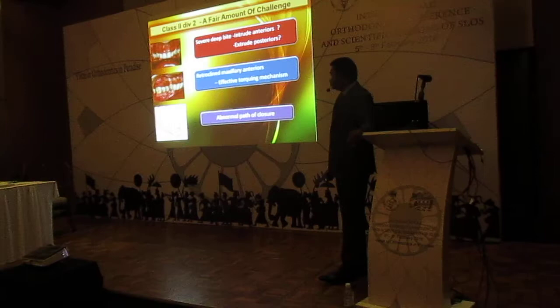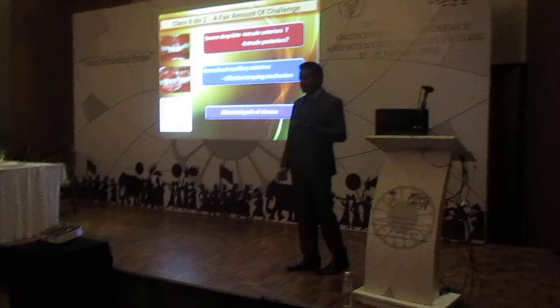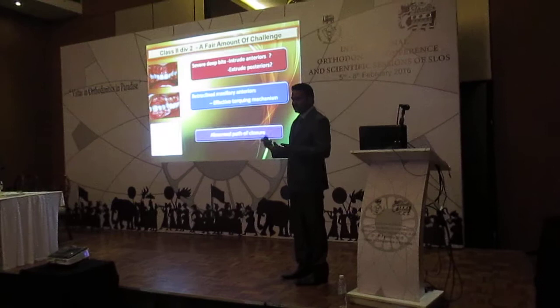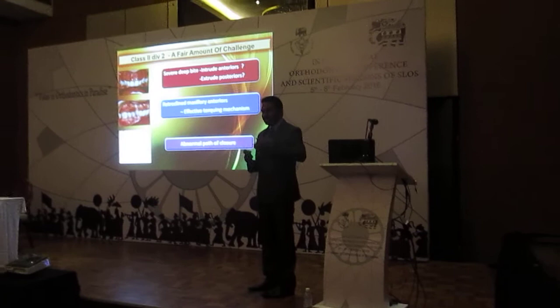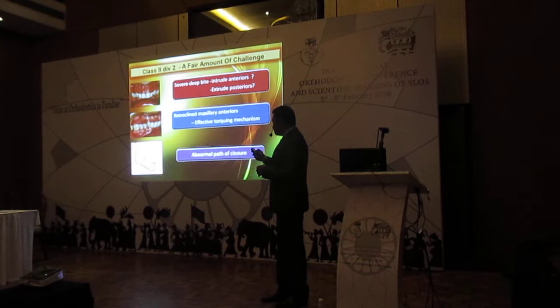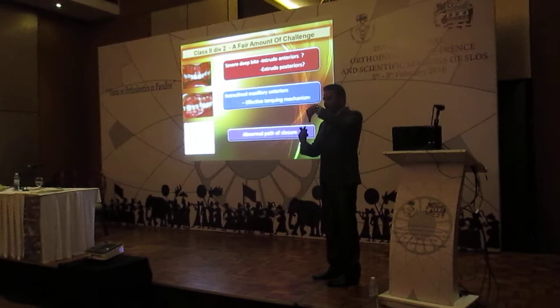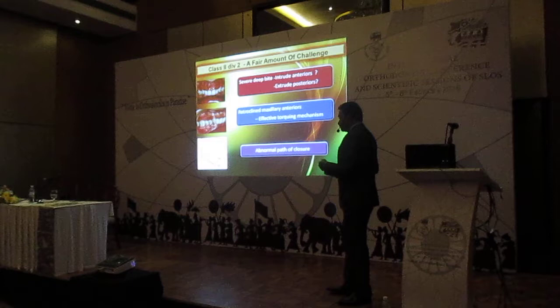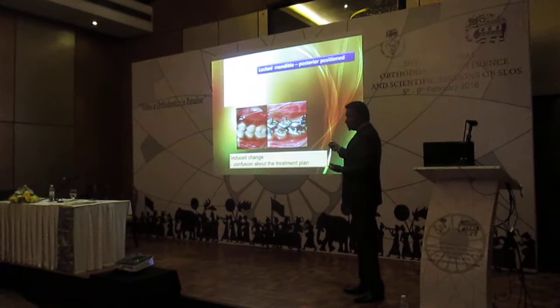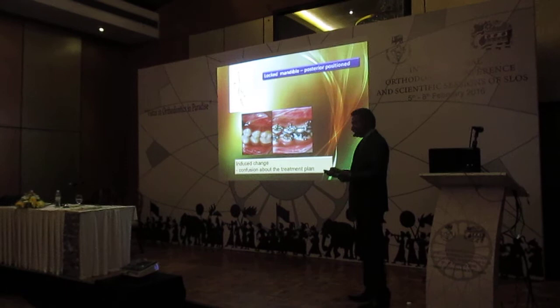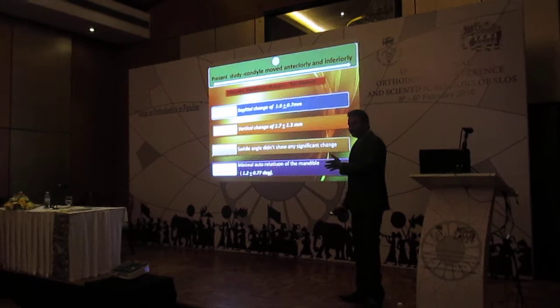Coming to the discussion. We know what Class 2 Division 2 malocclusion cases present. It has its own challenges: a severe deep bite, a decision whether to intrude the maxillary anteriors or extrude the posteriors, a retroproclined anterior, the need for an effective locking mechanism to tip the maxillary anteriors, and an alternate path of closure with the mandible going forward and coming back. And finally, the mystery is the induced change — the swinging of the mandibular anteriors and the anti-clockwise rotation.